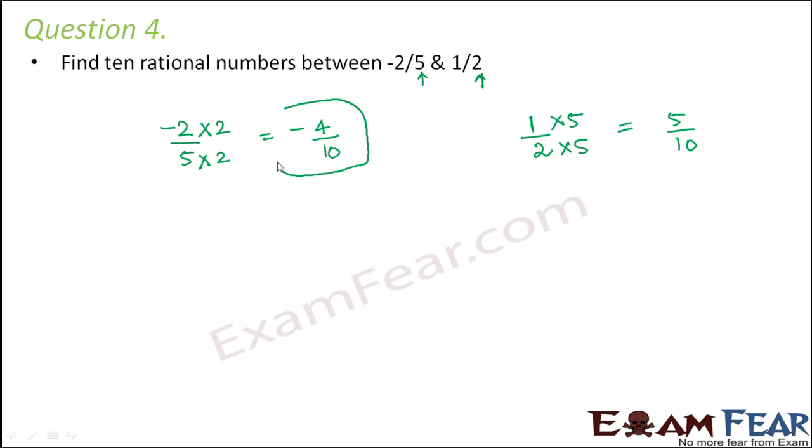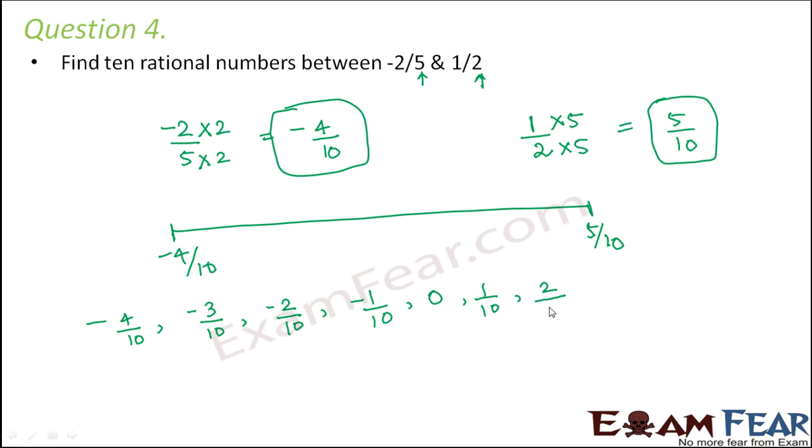So now our lower limit is -4/10 and our upper limit is 5/10. So now let's say if this is the number line, you have -4/10 somewhere here, you have 5/10 somewhere here, maybe 0 somewhere in between the two. So what are the numbers that would be located between -4/10 and 5/10? So you see -4/10. After that you will have -3/10, -2/10, -1/10, then 0/10 which is 0, then 1/10, 2/10, 3/10, 4/10, 5/10.